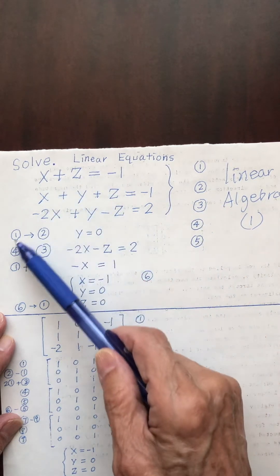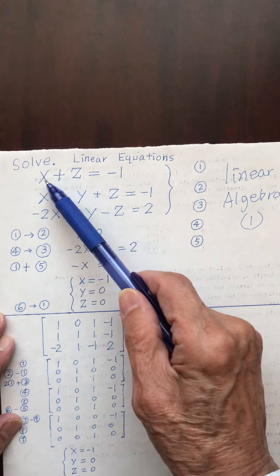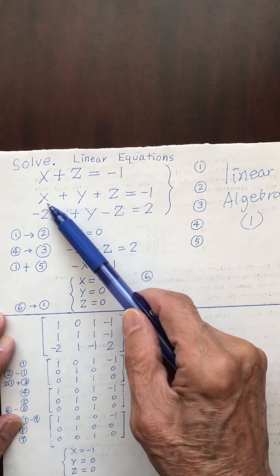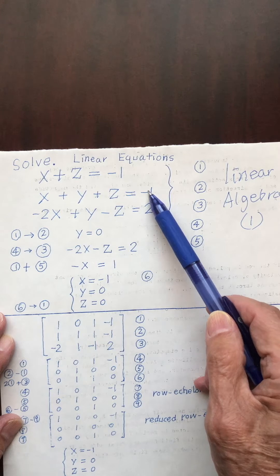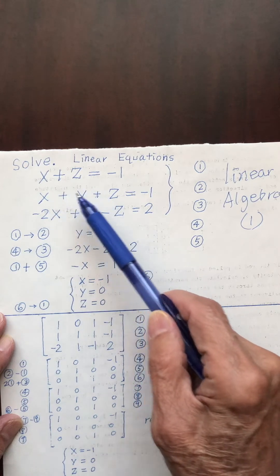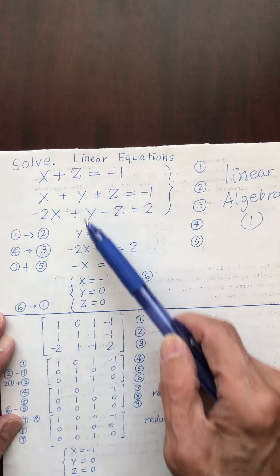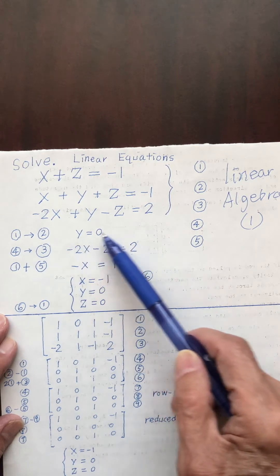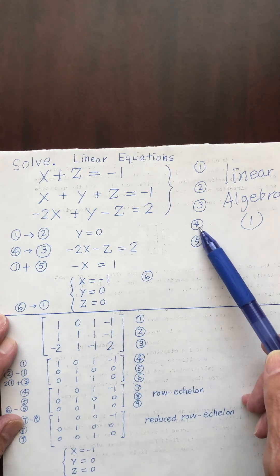I substitute equation one into equation two. Because x plus z is negative one, therefore this x plus z is negative one. So negative one on the left-hand side cancels the negative one on the right-hand side. That gives y equals zero. I label this result as equation four.